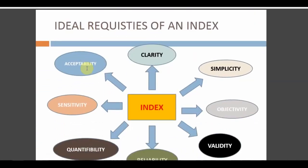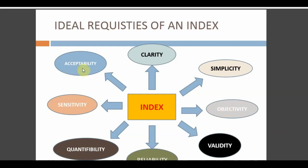The ideal requisites of an index: the criteria should be very simple and objective. Objective means the examiner, not the patient, decides the findings. The patient is the subject and the examiner is the object. If a patient has a different opinion about what you find in their mouth, you cannot trust the patient's words — the investigator has the final word. The index should also be acceptable by the patient and should have sensitivity.